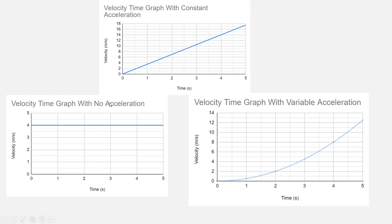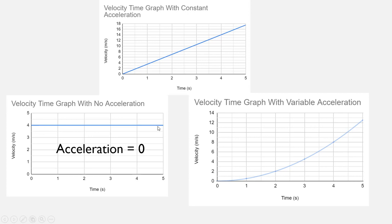The first situation is where we have no acceleration, and we can see this from the graph. At time equals zero we're going four meters per second, at one second we're going four meters per second, and at two seconds we're still going four meters per second. There is no change in velocity, so this flat line shows no change. Wherever you see a flat line on a velocity time graph, the acceleration is simply zero. That's the simplest case.